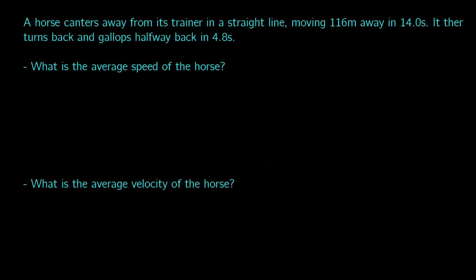Let's see these in action. A horse canters away from its trainer in a straight line, moving 116 meters away in 14.0 seconds. It then turns back and gallops halfway back in 4.8 seconds. So it's going to the midpoint in 4.8 seconds — that midpoint is going to be 116 divided by 2, which gives us 58 meters.